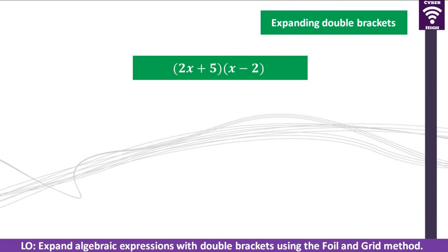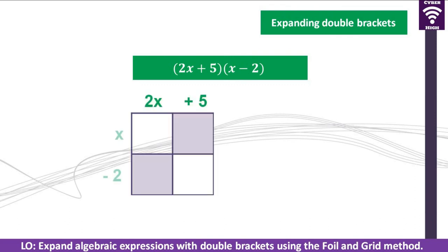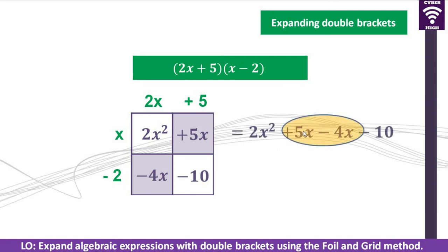We are going to continue practicing. We will look at (2x+5) multiplied by (x-2). We arrange the expressions on the grid and start multiplying: 2x times x gives 2x squared; x times positive 5 gives positive 5x; 2x times negative 2 gives negative 4x — remember, 2x is positive, so the sign comes from negative 2. Then positive 5 times negative 2 gives negative 10. Simplifying the middle terms, 5x minus 4x gives x — remember, we don't write 1x, just x. So the final answer is 2x squared plus x minus 10.